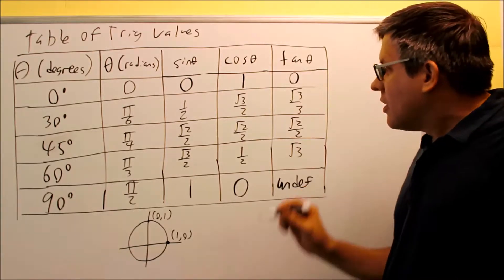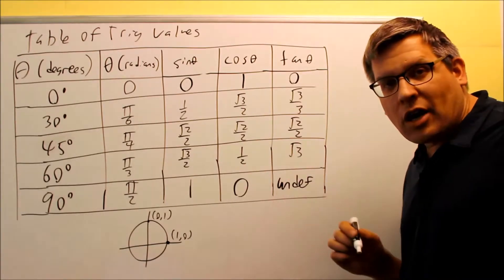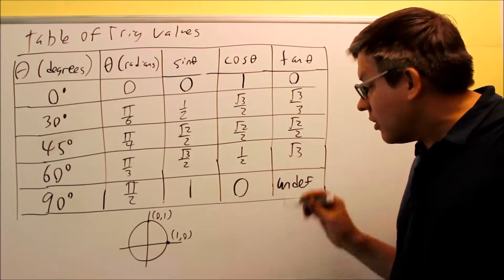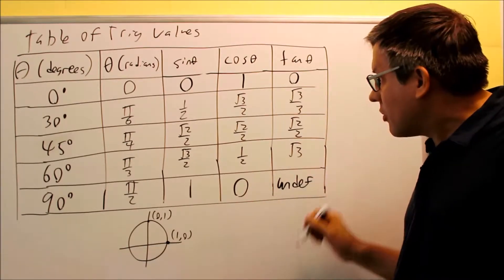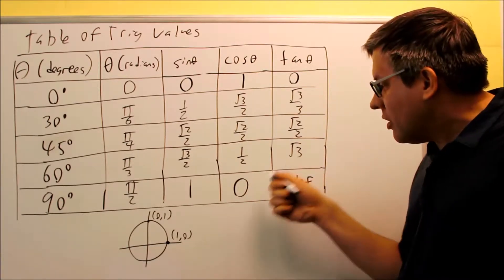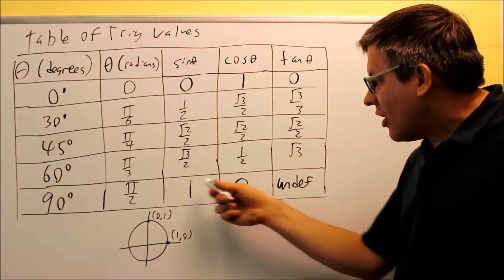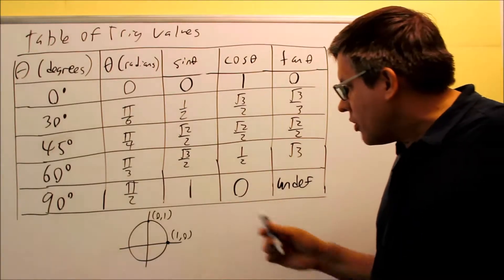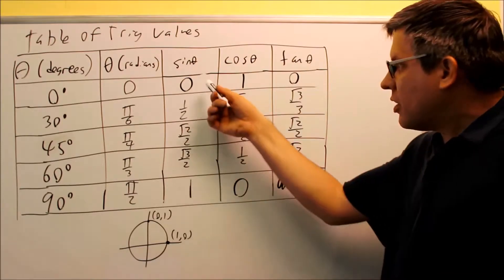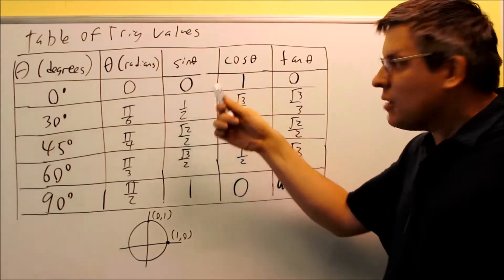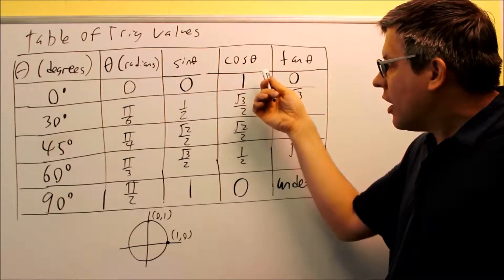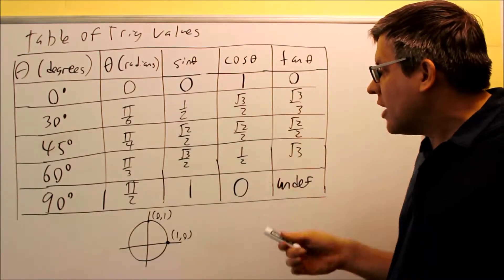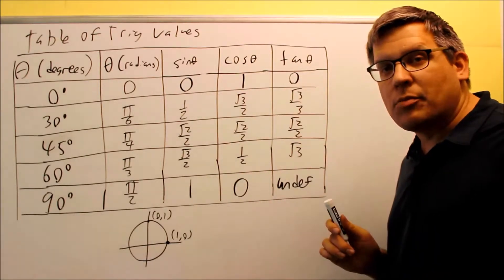If you try and put tangent 90 degrees into your calculator, it's probably going to give you a domain error. That's why you can't do it — it's undefined, because it's trying to take the y-value over the x-value: 1 over 0 is undefined. Whereas at 0 degrees it was okay, because y over x was 0 over 1, which equals 0. If 0 is on top it's fine — you just can't have a 0 on the bottom that you're dividing by.